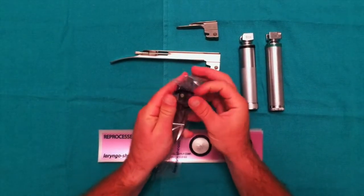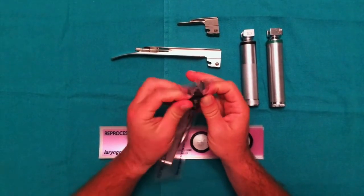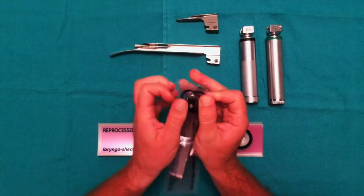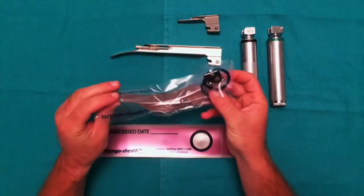Then, bring the flap of the laryngoscope sheath over the blade base and press down until it rests within the U-shaped connector.